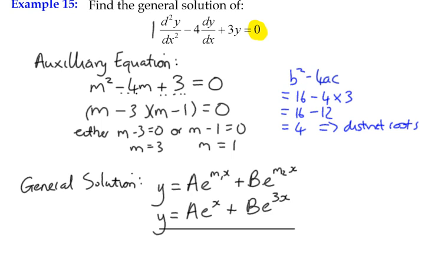We would need more information to find A and B, and we'll explore that later when we look at particular solutions. So that's Example 15. Hopefully that's been helpful. Examples 16 and 17 will be in separate videos covering equal roots and complex roots respectively.